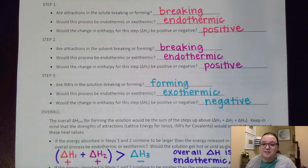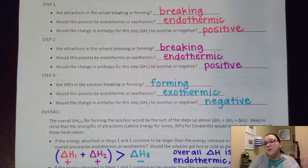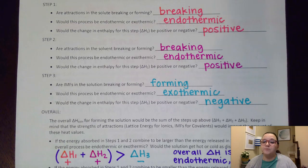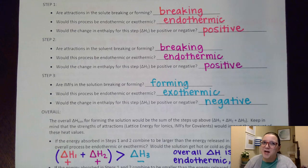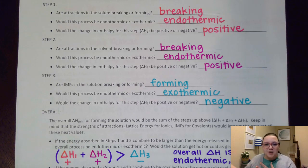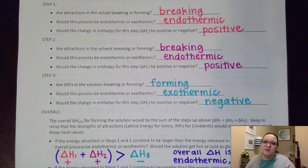Not all dissolving processes take place. It depends on what's happening with the IMFs — are the new IMFs that are forming either similar in strength or stronger than the original attractions? If the original attractions are significantly stronger, then I'm not going to form those new attractions in place of the old ones. You might remember a video back in Unit 3 where I talked about: I'm not going to break up with Chris Evans to go date somebody I'm less attracted to. Solutions do that same thing, so hopefully that rings a bell from our discussions back in Unit 3.